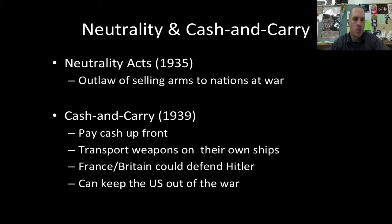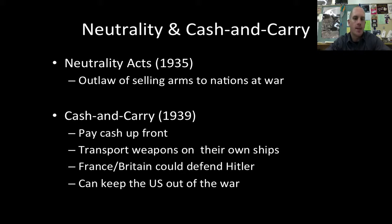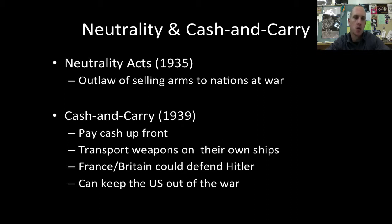Cash and carry, passed in 1939, is a loosening of the ties on the president. Foreign countries can come to the United States and pay cash up front — no credit. They must transport the weapons on their own ships, so we don't have a situation like the sinking of the Lusitania and losing American life. This will keep the United States technically neutral in terms of actual fighting.